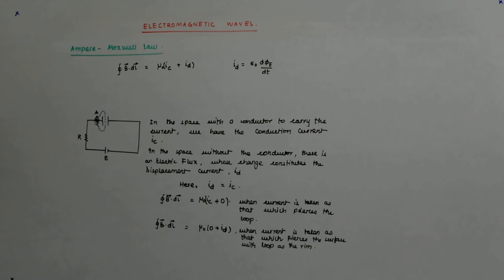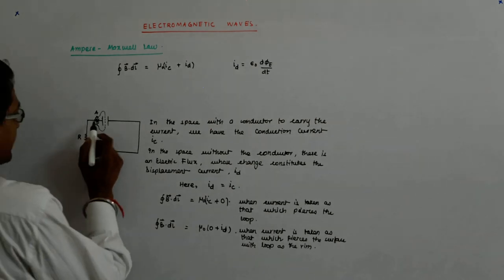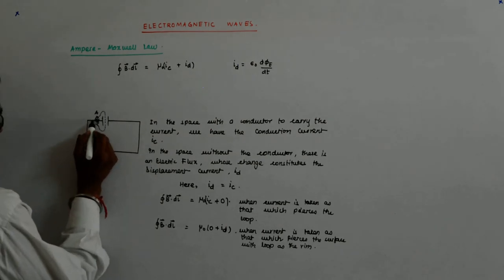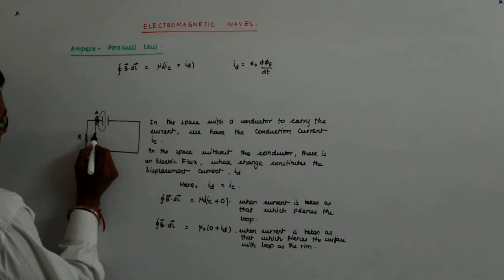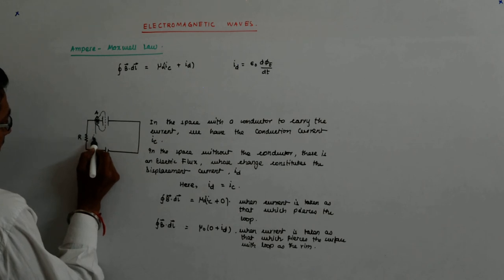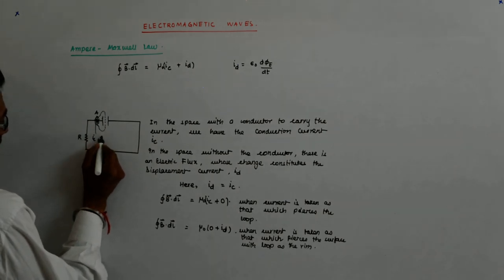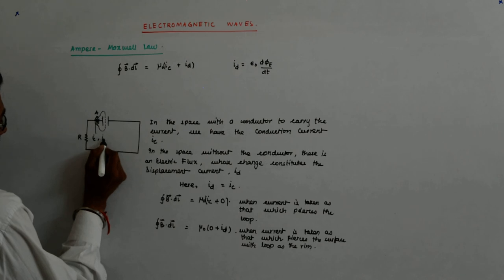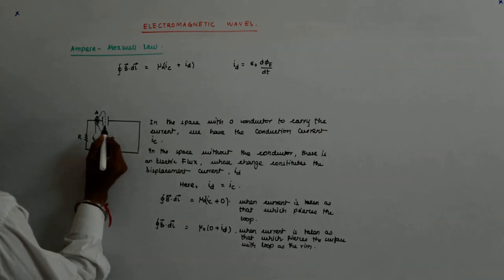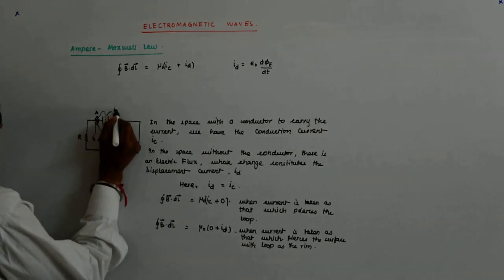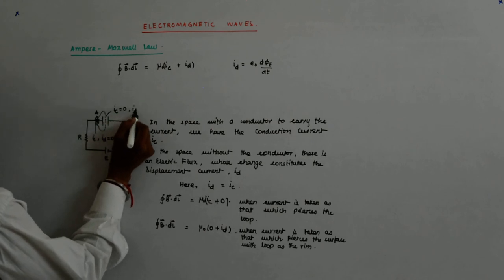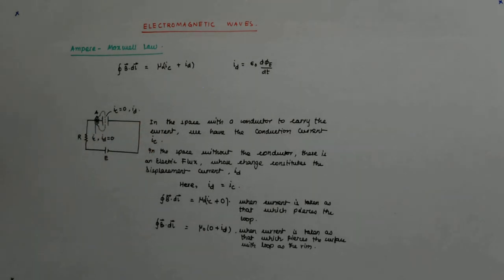The thing is like this. So when we are taking this part here, here I have IC and ID is equal to 0. Here, IC is equal to 0 but there is ID. It goes like that.